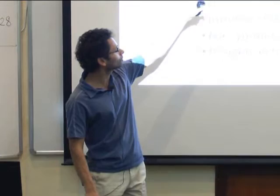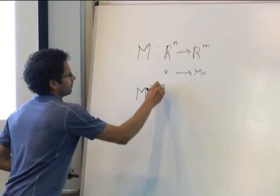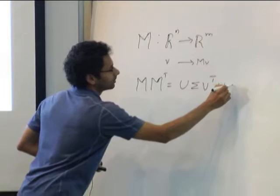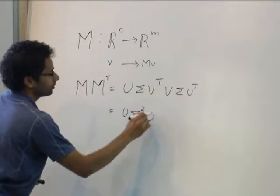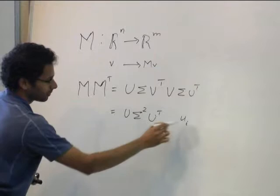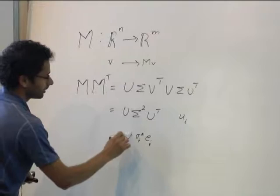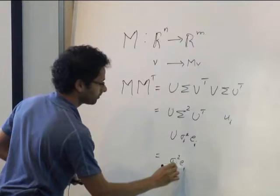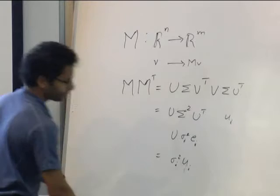The left singular vectors of M are the eigenvectors of MM-transpose. This can be seen easily because MM-transpose equals U Σ V-transpose times V Σ U-transpose, which is U Σ² U-transpose. Multiplying this matrix by a vector U_i gives σᵢ² U_i, confirming that U_i is an eigenvector with eigenvalue σᵢ².